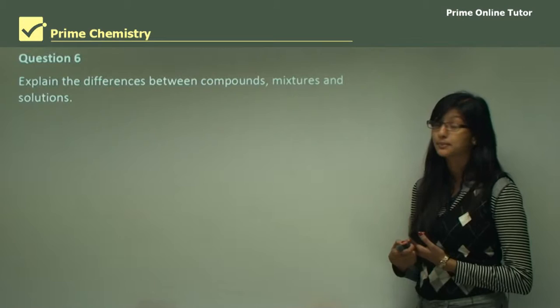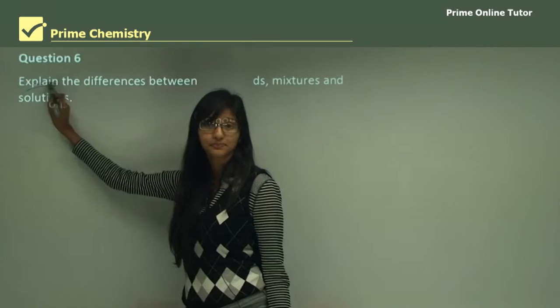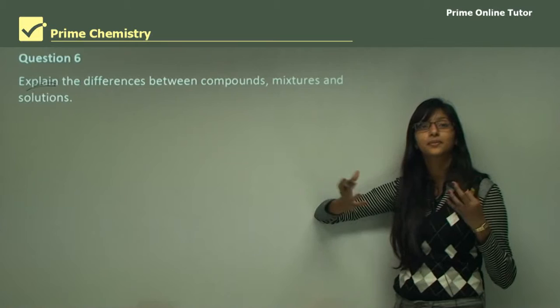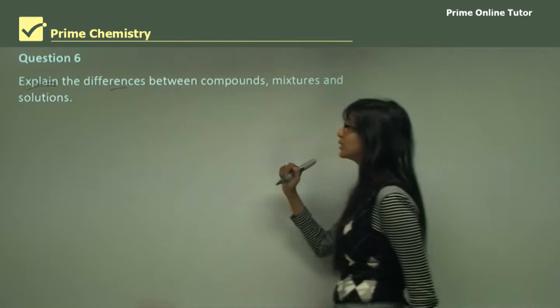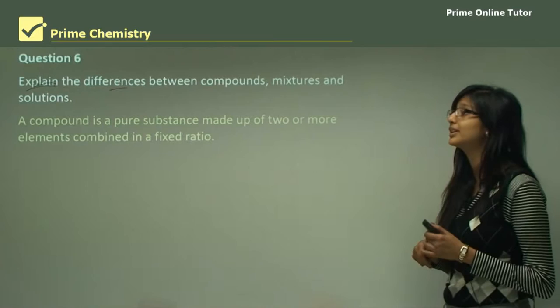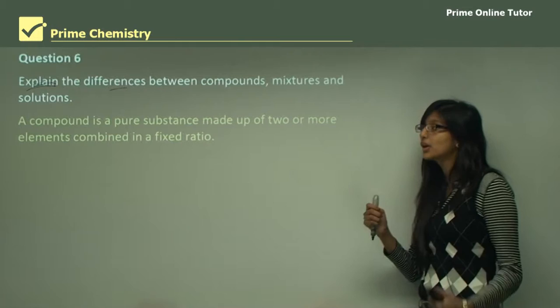Question 6 tells us to explain the differences between compounds, mixtures, and solutions. The verb here is 'explain,' meaning you have to tell the cause-and-effect relationship — why these are different from one another. A compound is a pure substance made up of two or more elements combined in a fixed ratio. For example, carbon and oxygen are two different elements, and when they come together you get carbon dioxide gas, which is your compound.